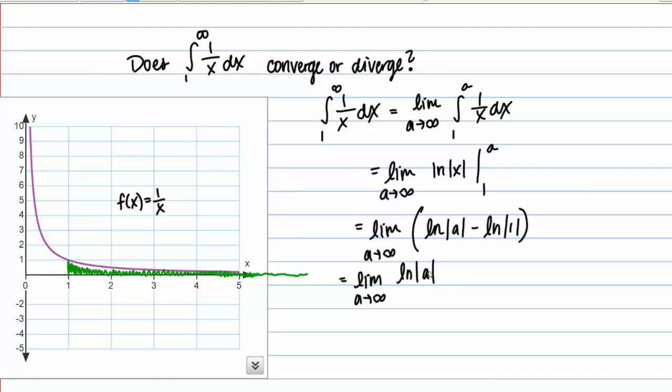Now if you know about the behavior of the natural log function, you should know that as the argument, or as this a goes to infinity, the natural log is going to go to infinity as well. So this limit then equals infinity.